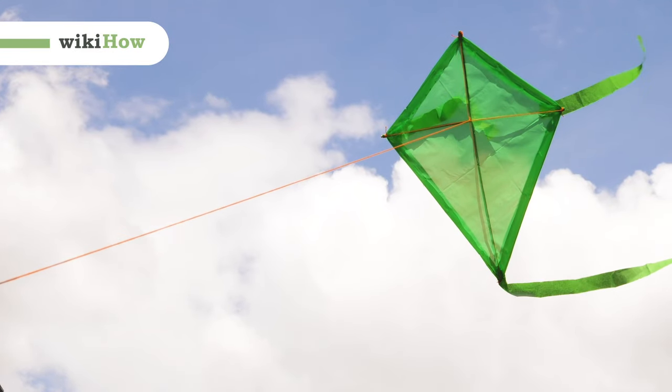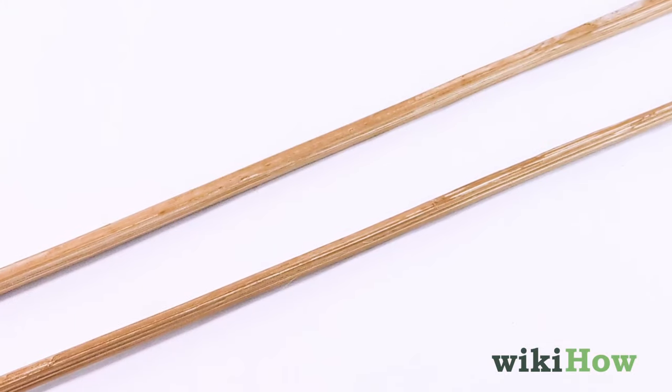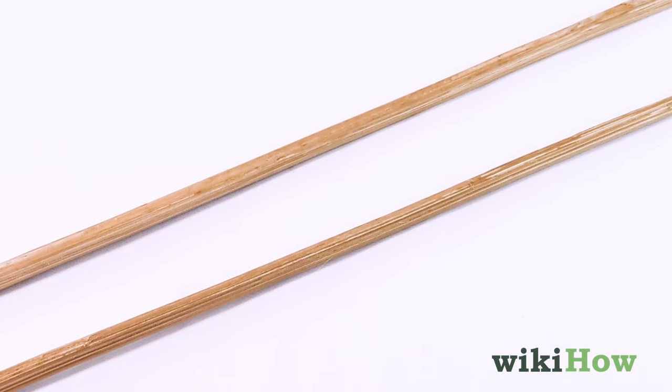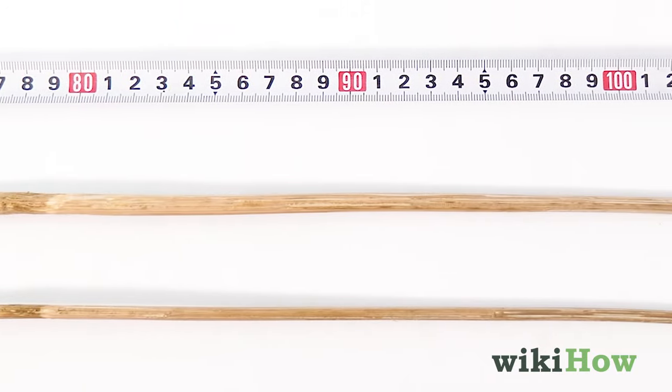To make a kite, first you'll need two wooden dowels that are less than 2 inches (5 centimeters) in diameter and about 40 inches (100 centimeters) long.